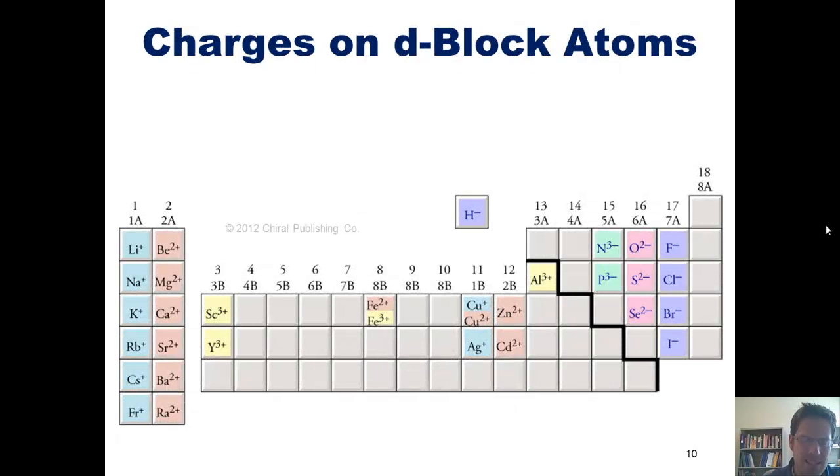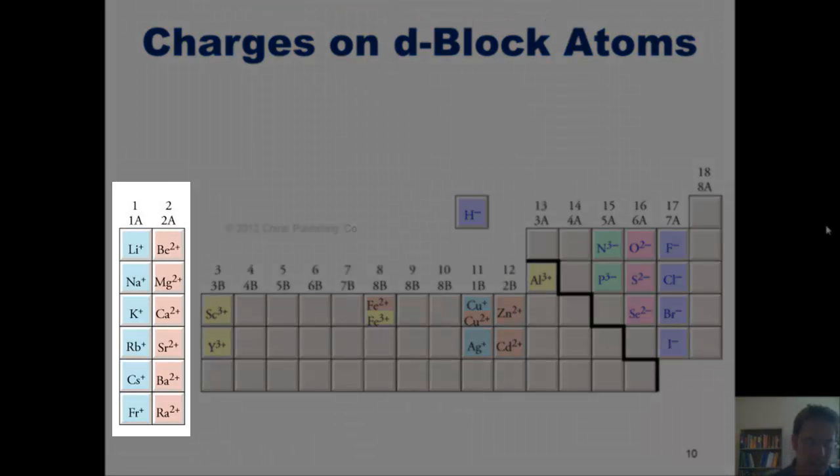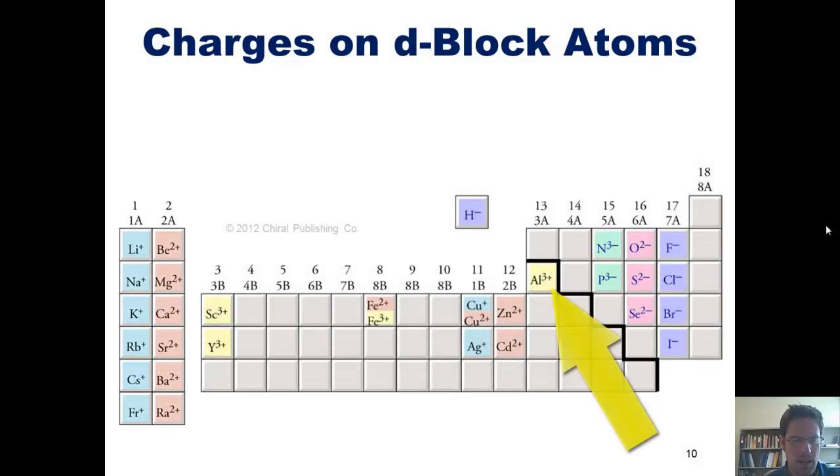Thus far we've seen that it's pretty easy to predict what charge an element will be when it becomes an ion. For metals in groups 1a and 2a, their ions' charges will just be plus 1 and plus 2 respectively. For aluminum over here in group 3a, its ions' charge is just plus 3.